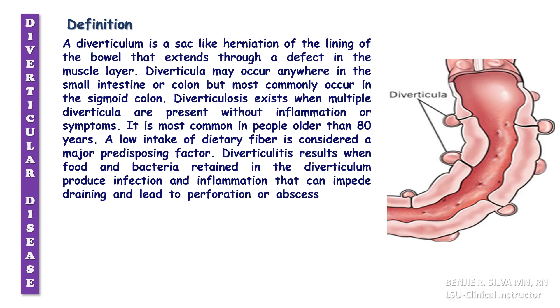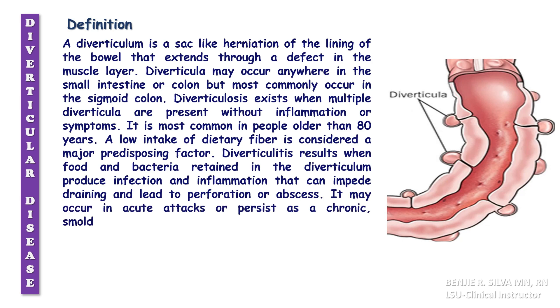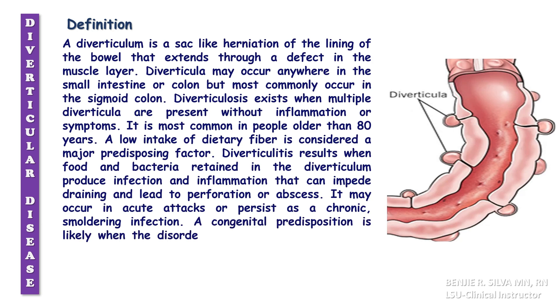Diverticulitis may occur in acute attacks or persist as a chronic, smoldering infection. A congenital predisposition is likely when the disorder is present in those younger than 40 years old.